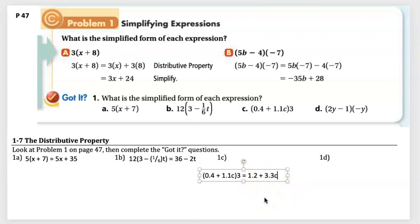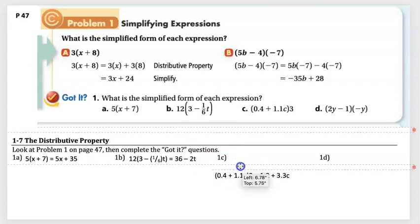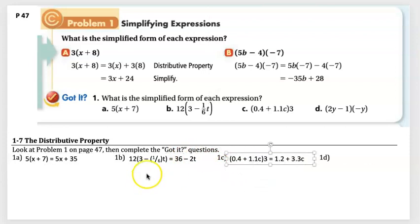Best practice is to write the variable first. For 1b in Schoology, it would be -2t+36. For this problem, best practice would be 3.3c+1.2 with the variable first. That's the most accepted way among mathematicians. Let me double check - yes, that looks good.